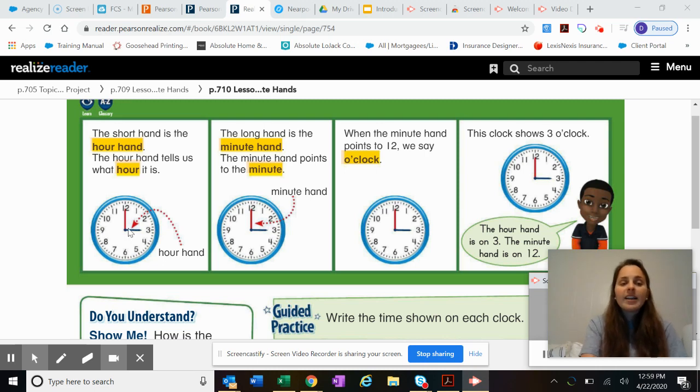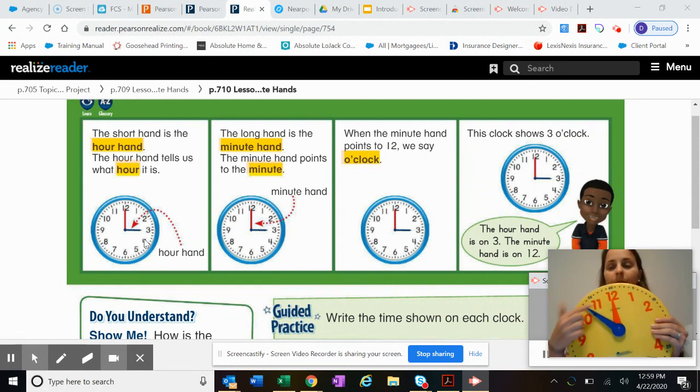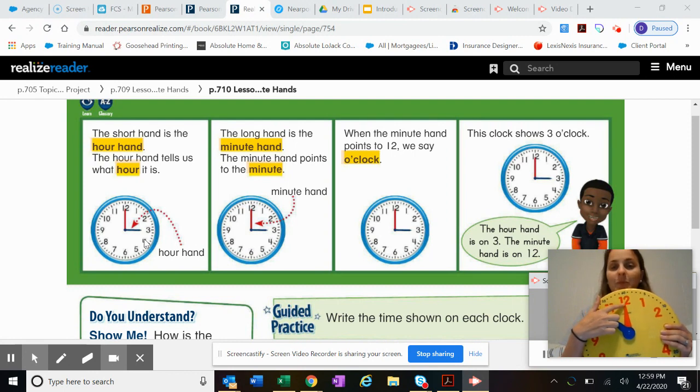The shorthand on the clock is the hour hand. The hour hand tells us what hour it is. So this little one that's pointing at the 12 right now is the hour clock. Sorry, not the hour clock, the hour hand.